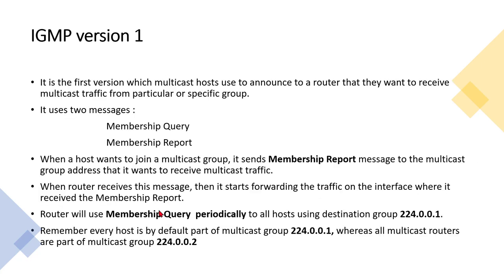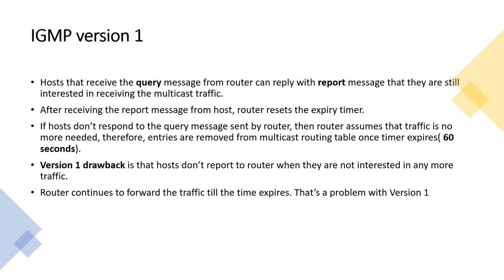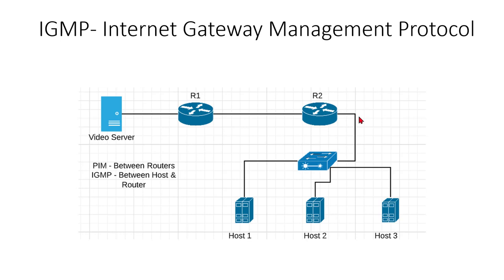Once a host starts receiving multicast traffic, the router will send periodic membership query messages to the host. These are sent every 60 seconds. The query message asks: does the host still want to receive the traffic? If the host says yes, it responds with a membership report message saying it still wants to receive the traffic. The router then receives that report message and resets the timer.